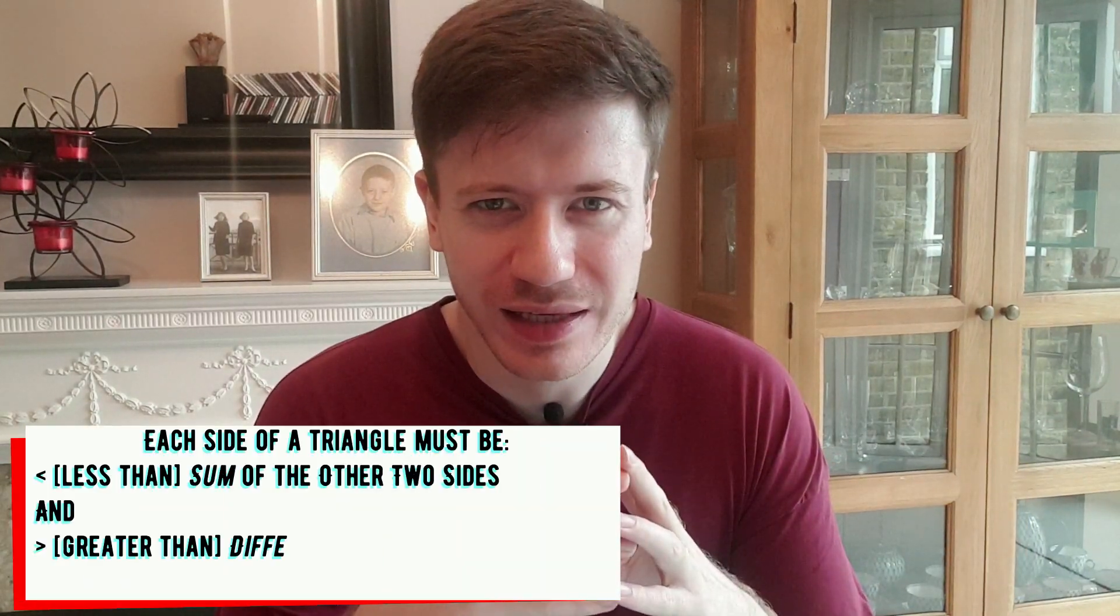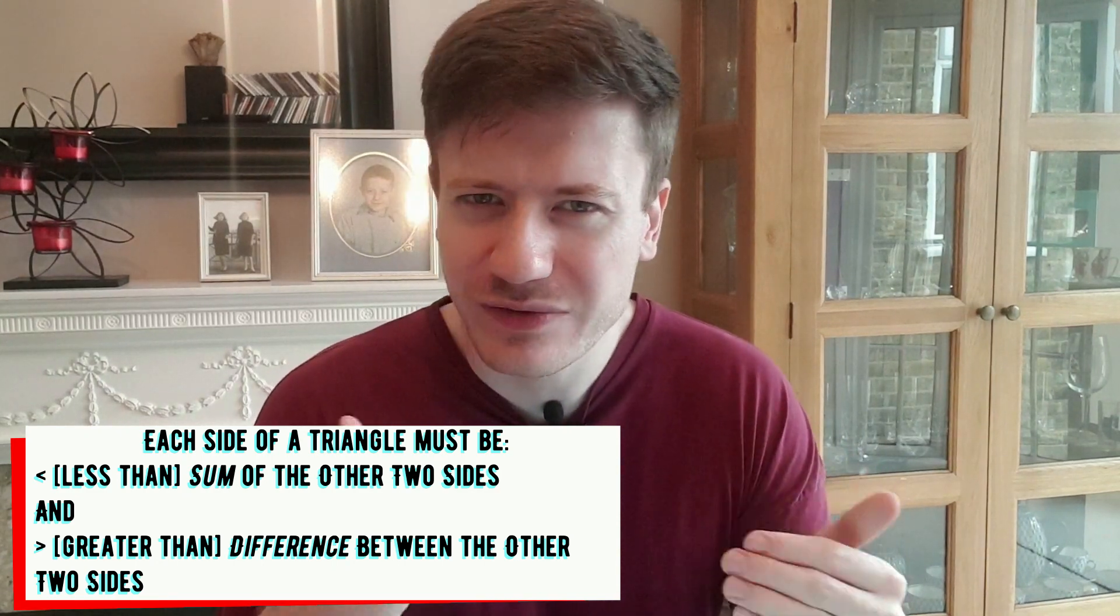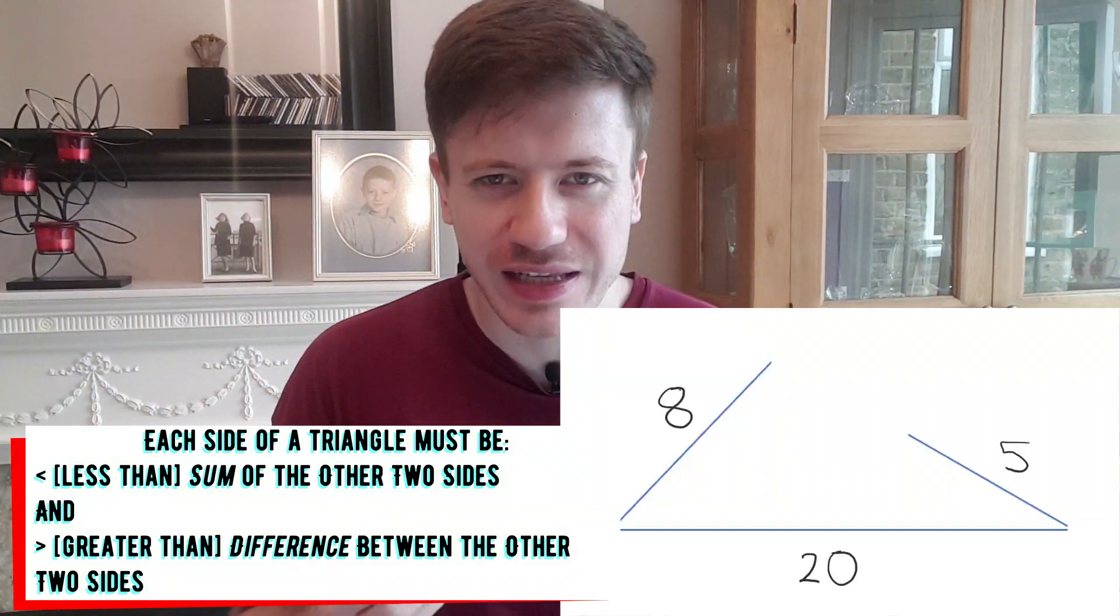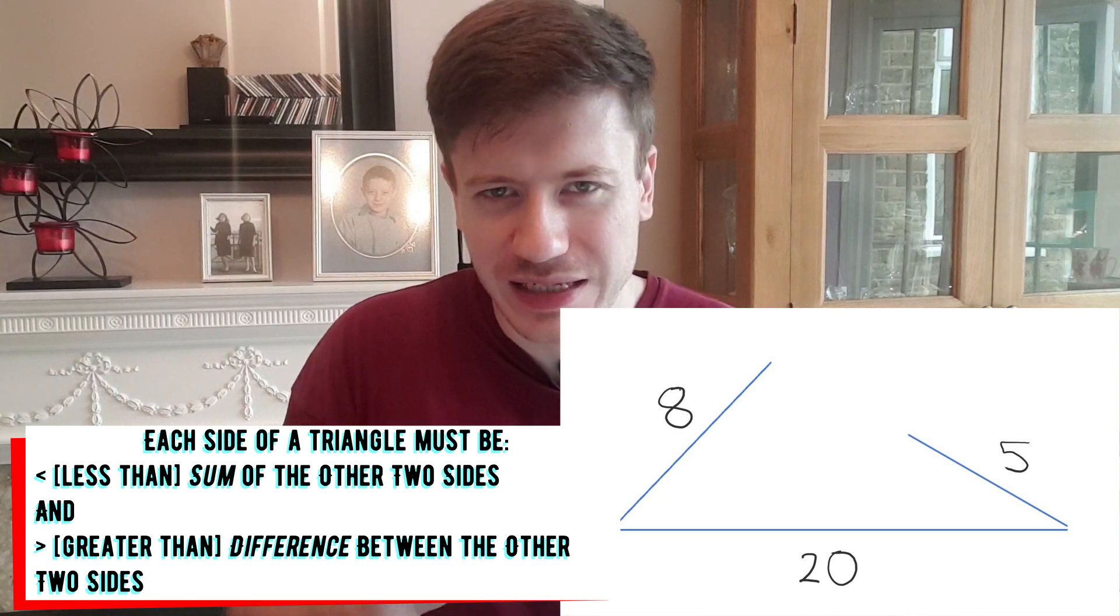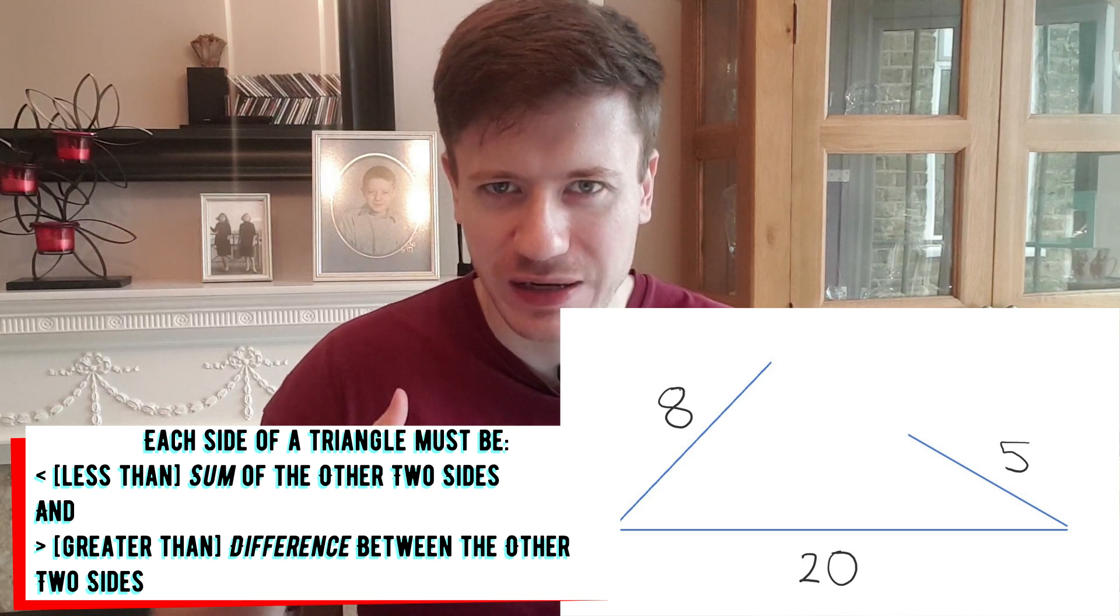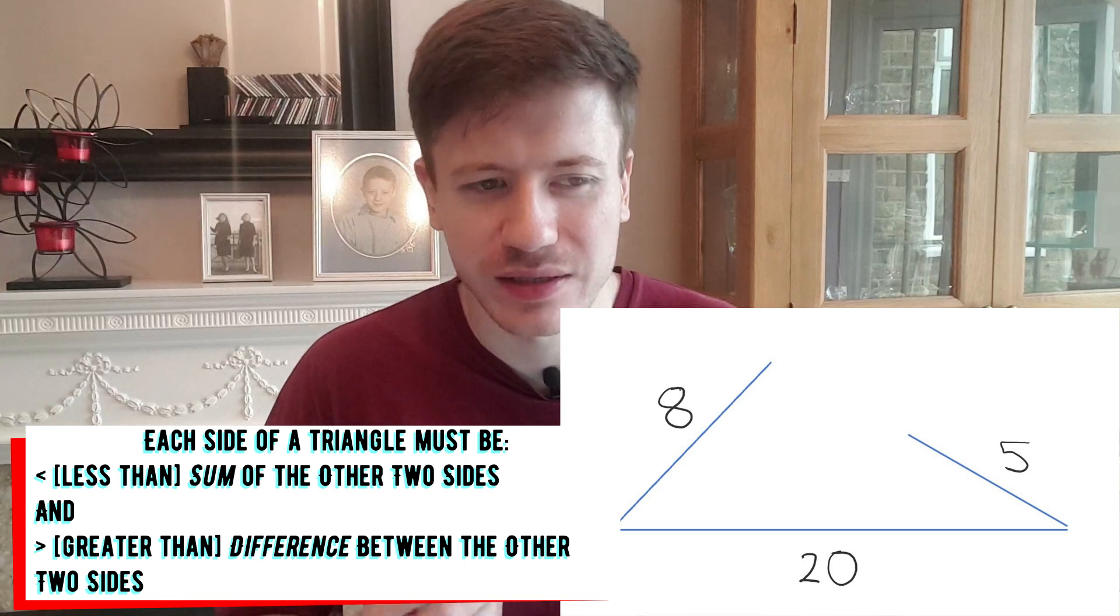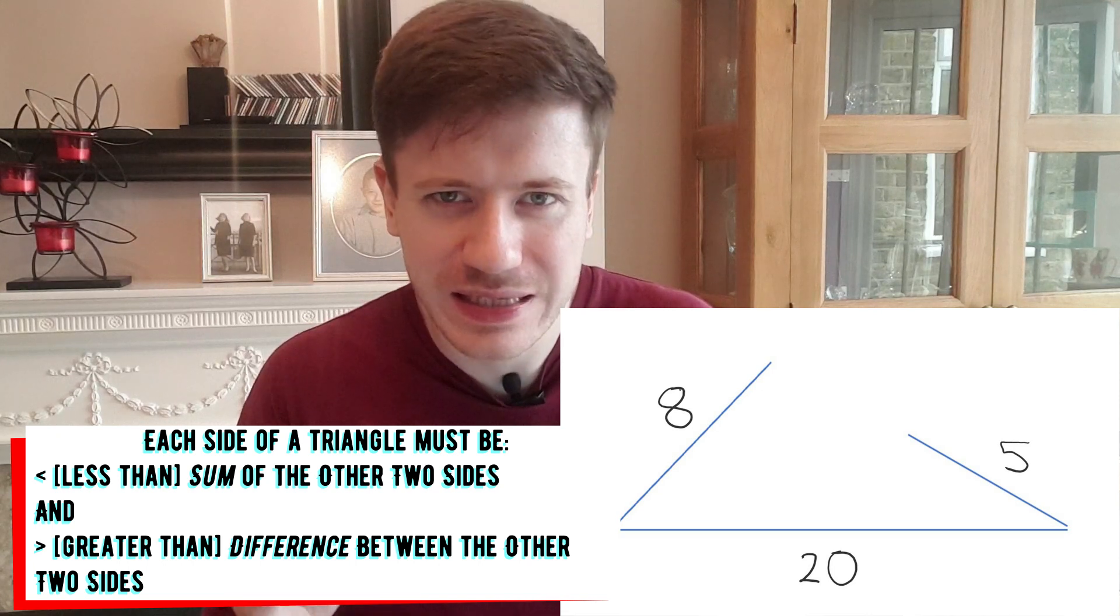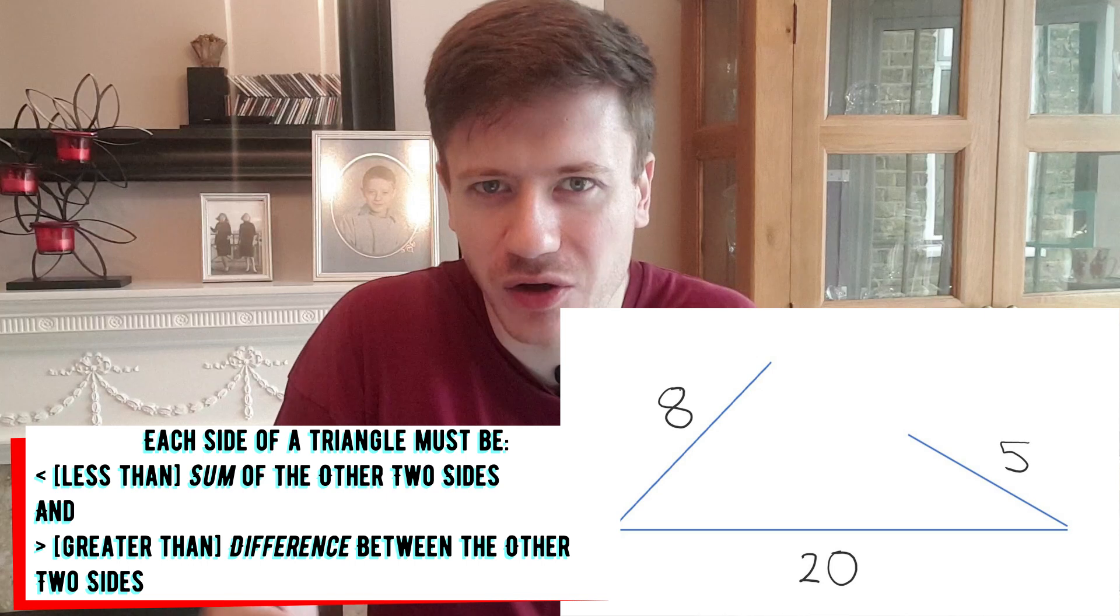At this point, you're probably thinking, okay Philip, I kind of get how the rule works a little bit, but where does that rule come from? Why does the third side have this range of values that it must be? Hopefully this diagram will help make it clear. If the third side is too long, then the other two sides won't be long enough to reach and match that third side, and so you'll have an incomplete triangle. Likewise, if the third side is too short, then the two shorter sides simply won't be long enough to match or meet that third overly long side.